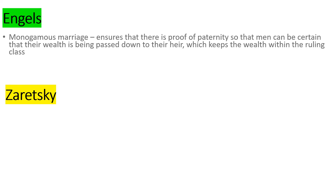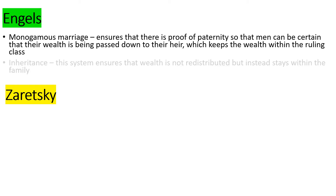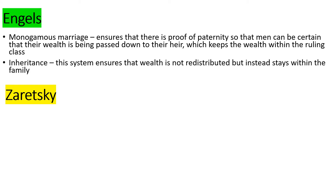Once you've had a go, you can check your answers here. For Engels, the monogamous marriage ensures that there is proof of paternity - who the father is - so that men can be certain that their wealth is being passed down to their proper heir in the bloodline. This keeps the wealth within the ruling class. Inheritance is a system which ensures that the wealth isn't redistributed but instead stays within the family.